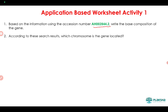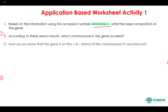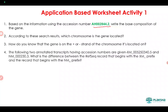Specify whether it is on the p arm or q arm and the exact location. Also, how do you know whether this gene is on the positive or negative strand? Here is a hint: if the feature coordinates are in ascending order from 1 to 50, it is a positive strand. If they go in reverse — for example starting at 414 and ending at 1 — it is a negative strand. Look carefully at the GenBank record to determine this.